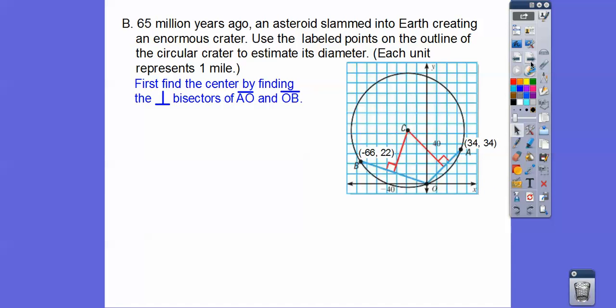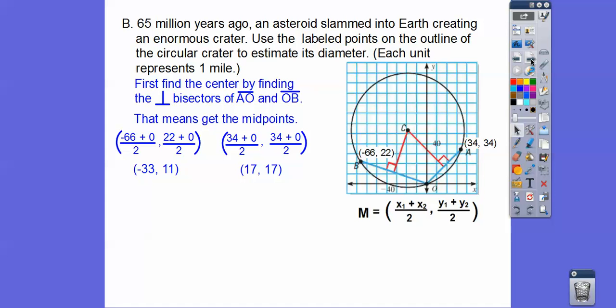So first we're going to do is find the midpoints. So the midpoints are those two ordered pairs right there. And now we're going to find the slopes of those chords.